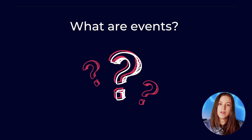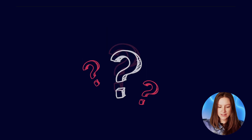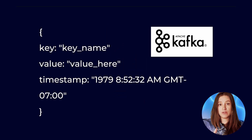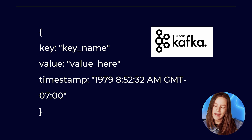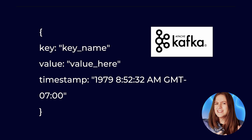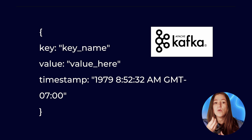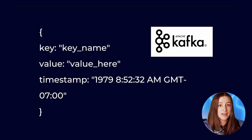Now, events look like this in the Kafka universe. And you might look at that and wonder how it's different from an object. Well, it pretty much is one, but the answer lies in how we treat an event and the fact that it's immutable.